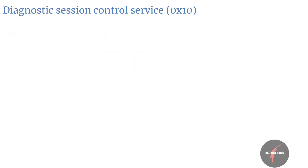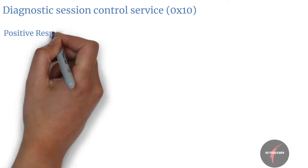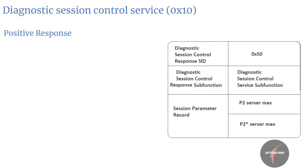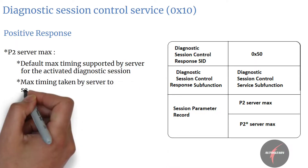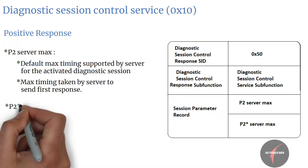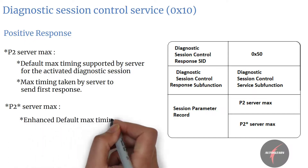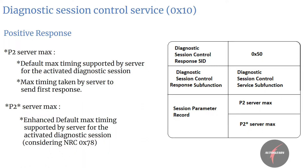The response of Diagnostic Session Control can be either positive or negative. For the positive response, the Diagnostic Session Control response SID is mapped to value 0x50, the sub-function in the response equals the sub-function in the request, and the session parameter record contains session-specific parameters such as P2 server max and P2* server max values reported by the server. The P2 server max value is the default maximum timing supported by the server for the activated diagnostic session and is also the max time taken by the server to send the first response. The P2* server max value is the enhanced default max timing, also accounting for the NRC 0x78 pending request NRC supported by the server.